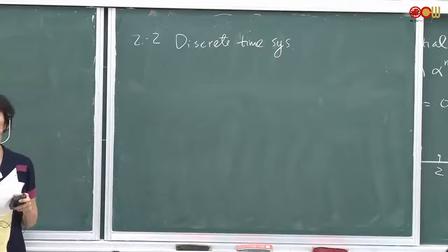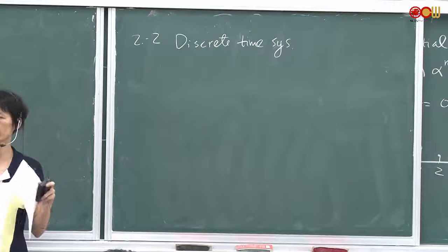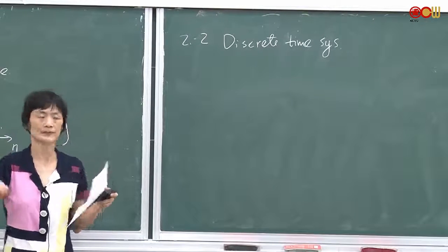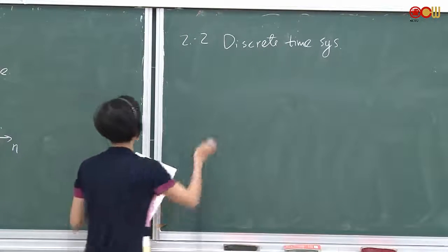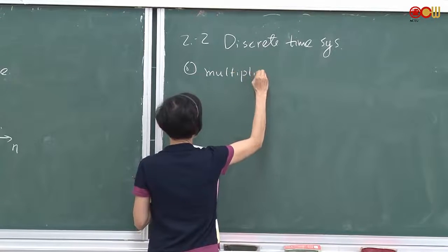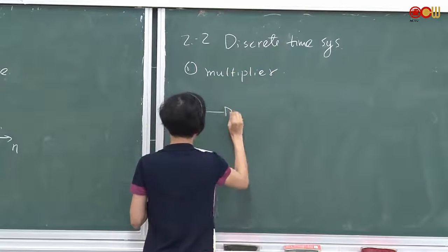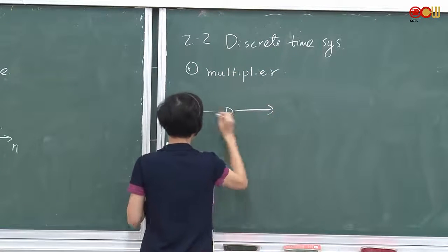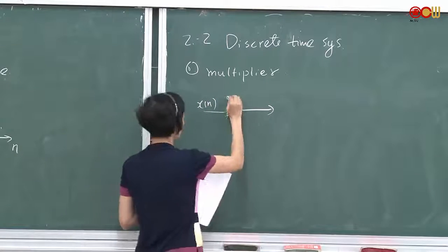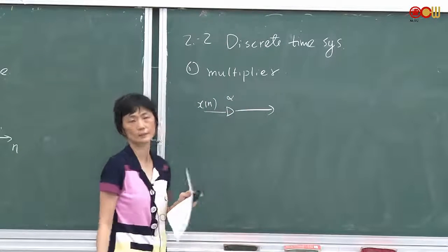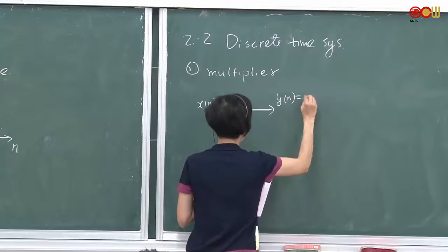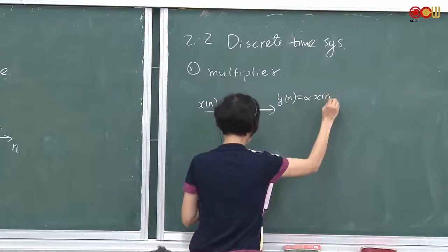In our system we have addition and multiplication. So we have a multiplier. If we have xn as the input and we scale it by alpha, the output is simply alpha times xn.